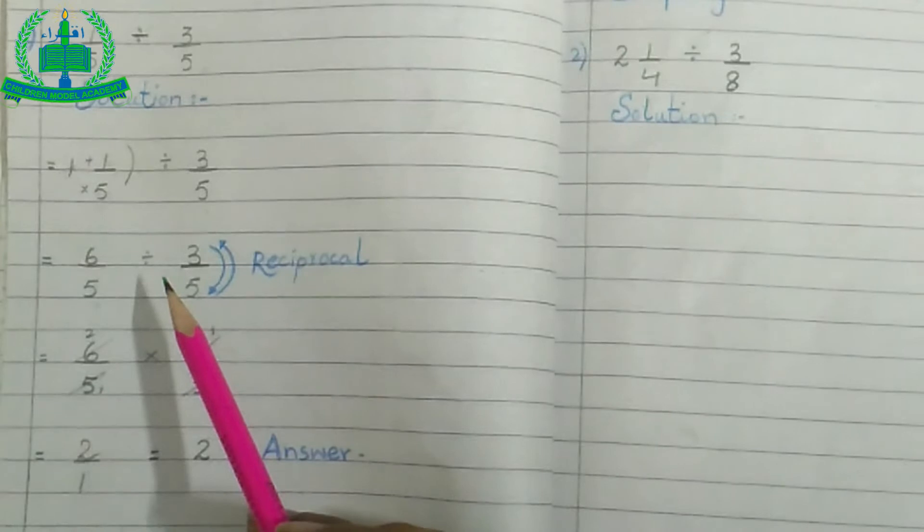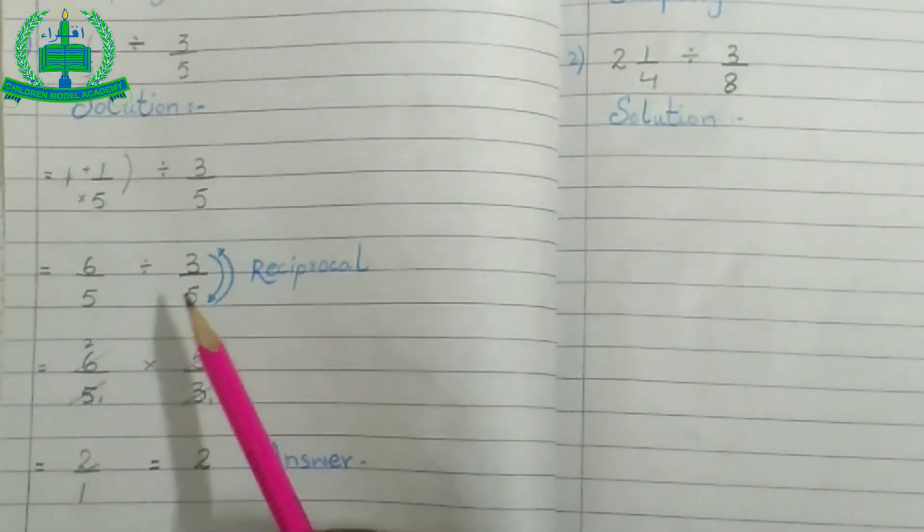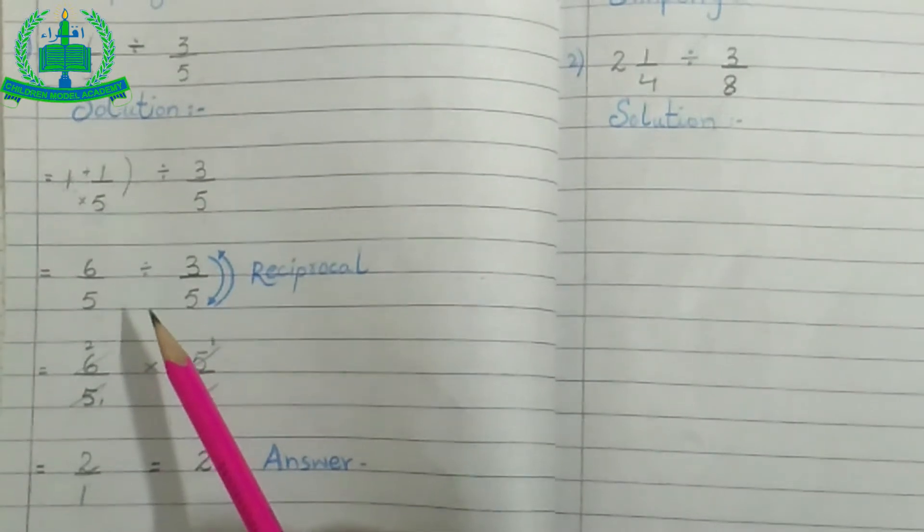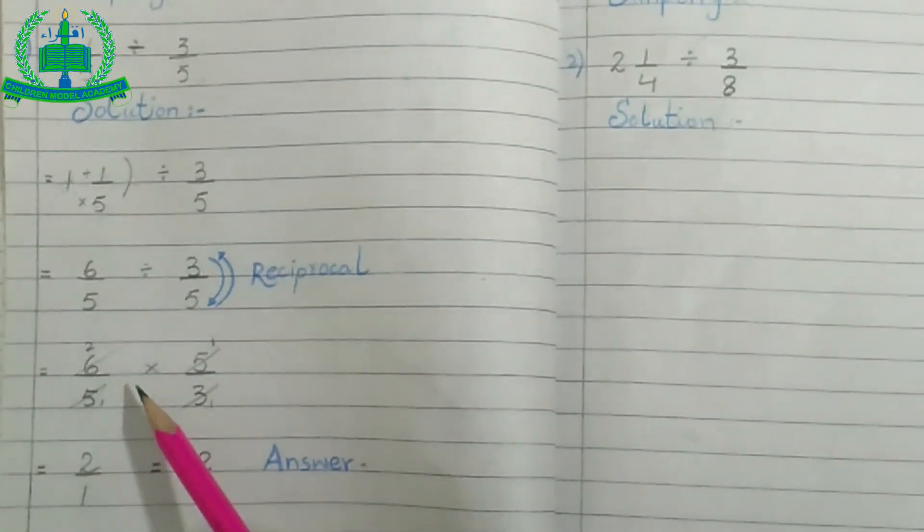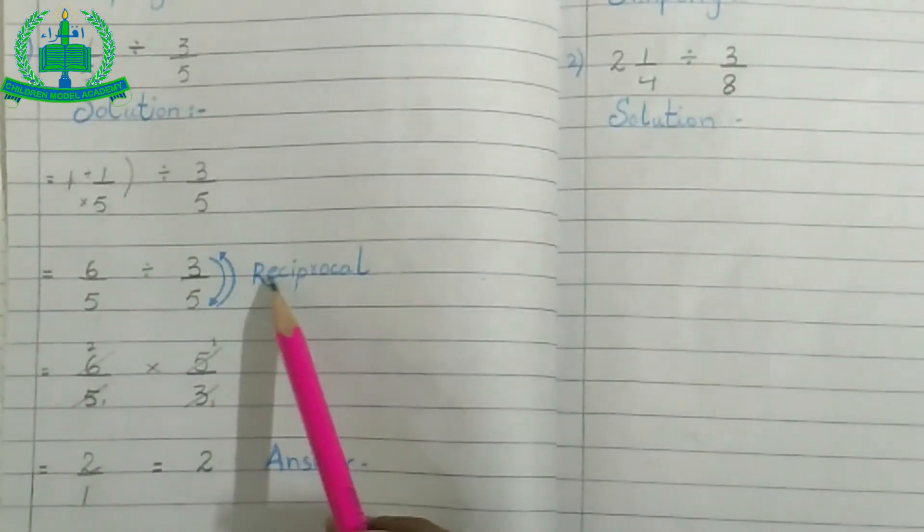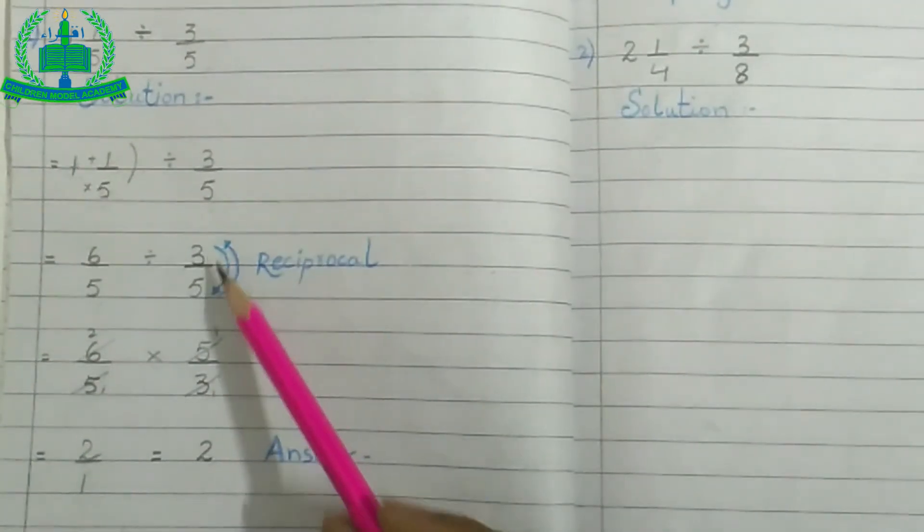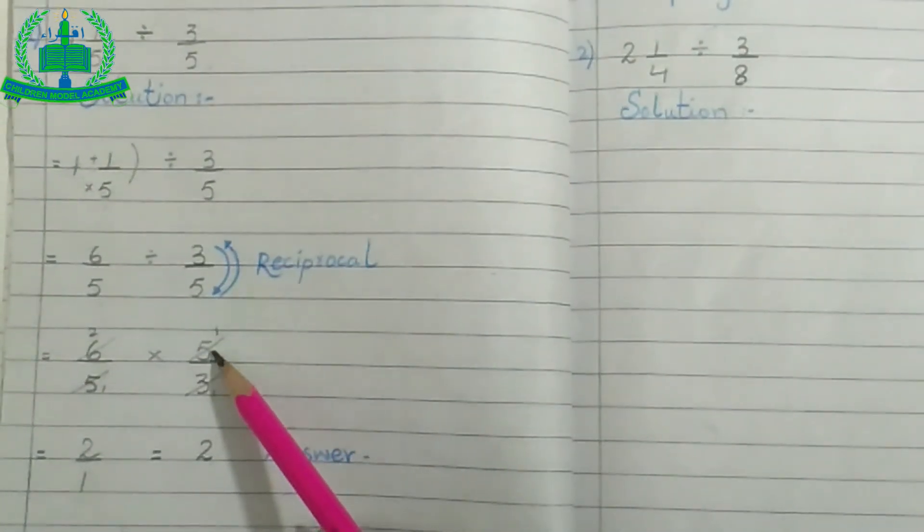Divide की sign के साथ हम कोई भी fraction cancel नहीं कर सकते हैं. इसलिए, cross multiplication के लिए हम divide की sign को change करेंगे. जब sign change होती है, तो sign के बाद वाली fraction reciprocal हो जाती है. इस में 3 upon 5 convert into 5 upon 3.